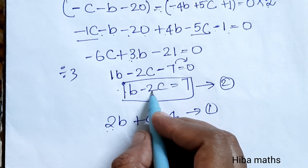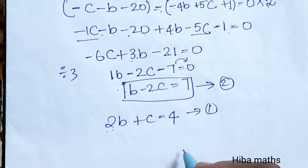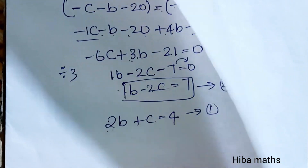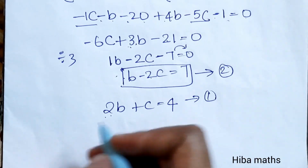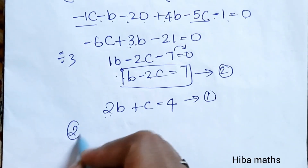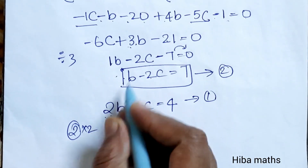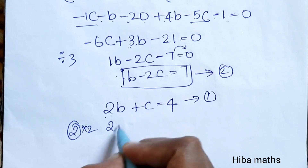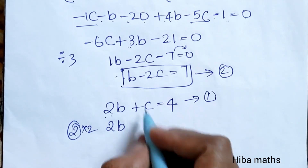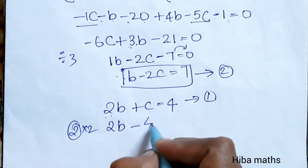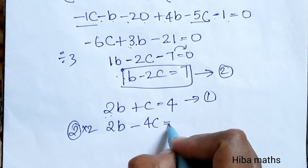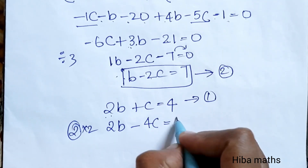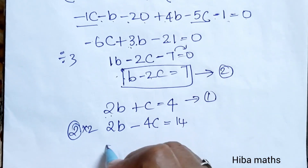Now using the elimination method with the condition 2b plus c equals 4. Multiplying through: 2 into 2 gives 4, 2 into b gives 2b, minus 2 and 2 fours are 4c, that is equal to 7, and 2 fours are 14.